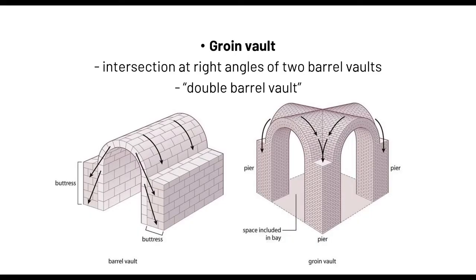Vaulting system number two during the Romanesque era is the groin vault. The groin vault is the intersection at right angles of two barrel vaults. If you take a barrel vault, rotate it, and intersect the two, you get a groin vault — which is also called a double barrel vault, because it is literally two barrel vaults that meet. 'Groin' refers to the middle intersection point where the two vaults meet. So a groin vault is also called a double barrel vault.